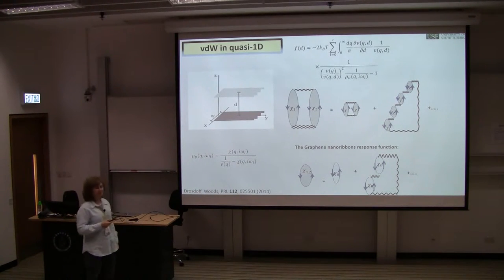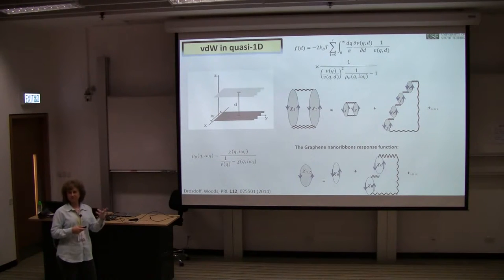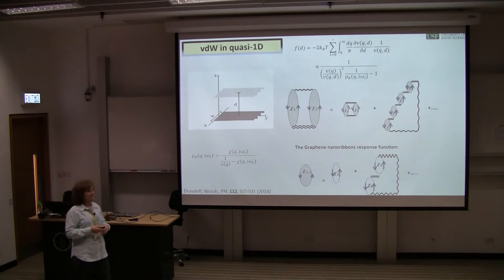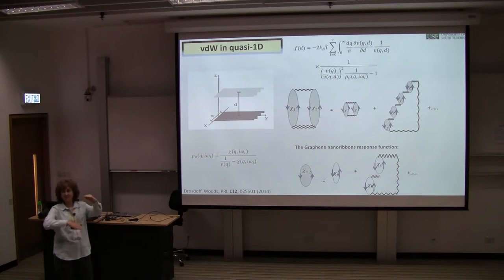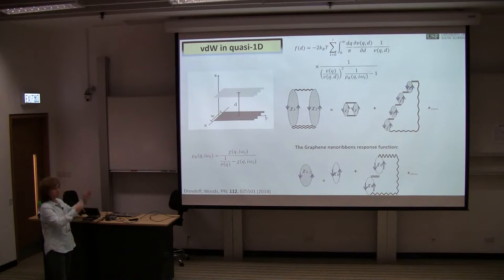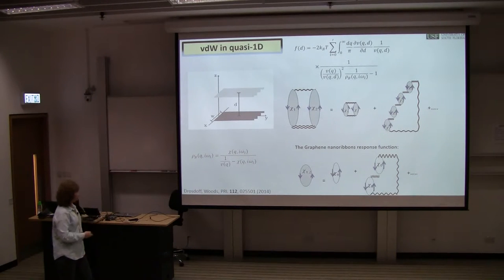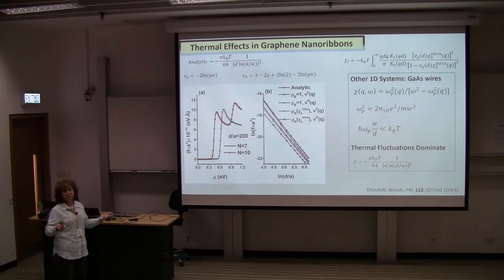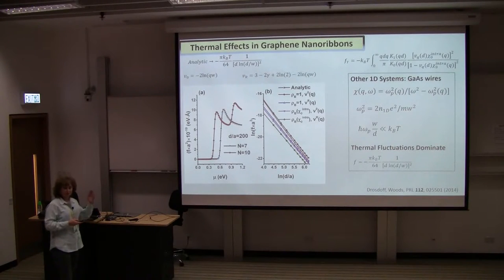I can write the interaction in a Lifshitz-like expression, lumping the contributions from response in something like a reflection coefficient. This is only if I treat the quasi-1D system as a wire. This formalism you can apply not only to graphene nanoribbons but to all 1D systems for which this approximation can be imposed.